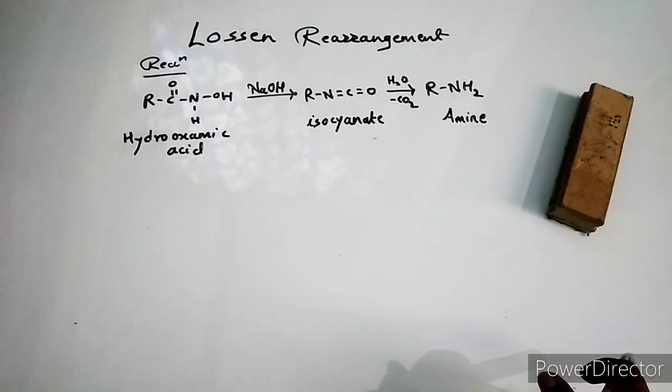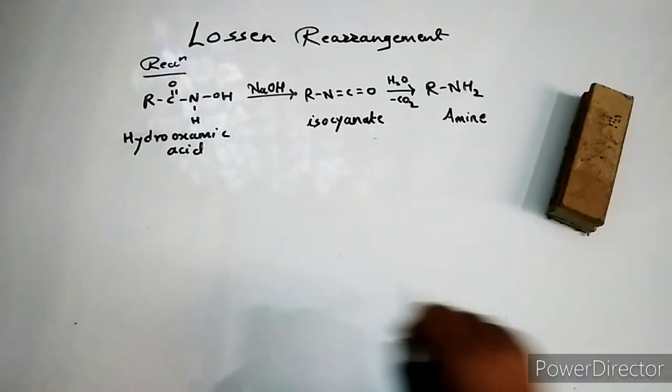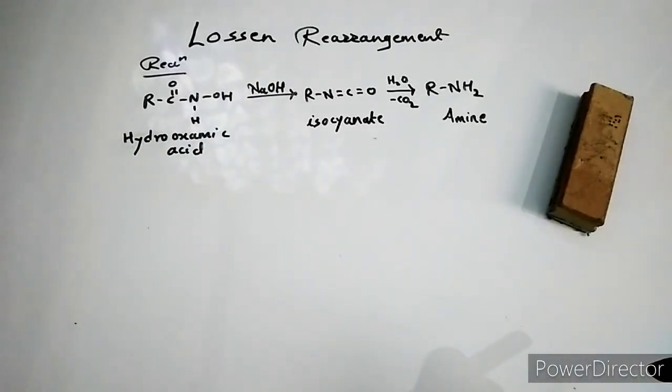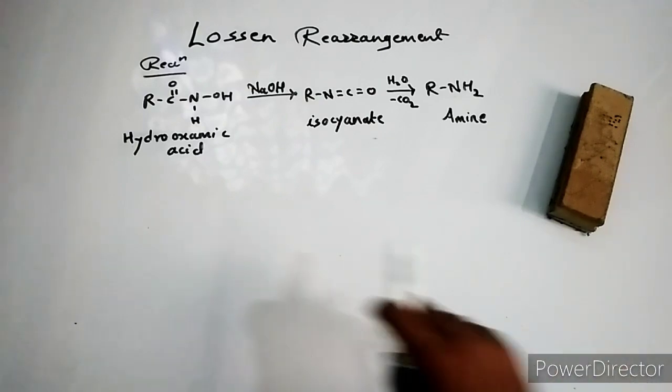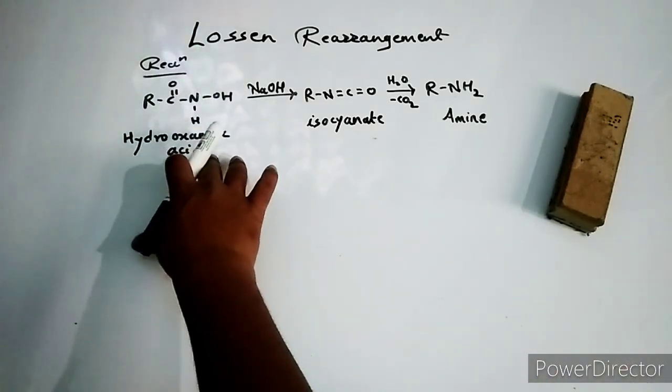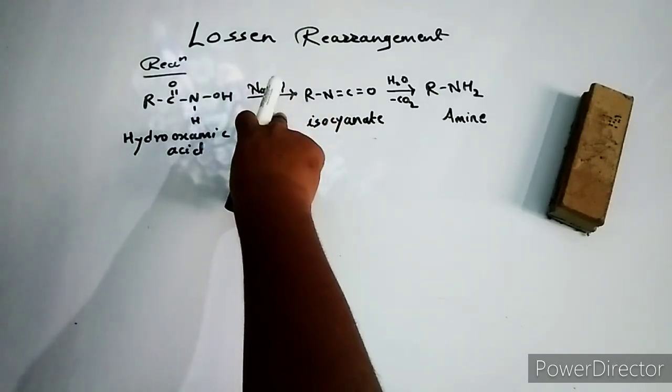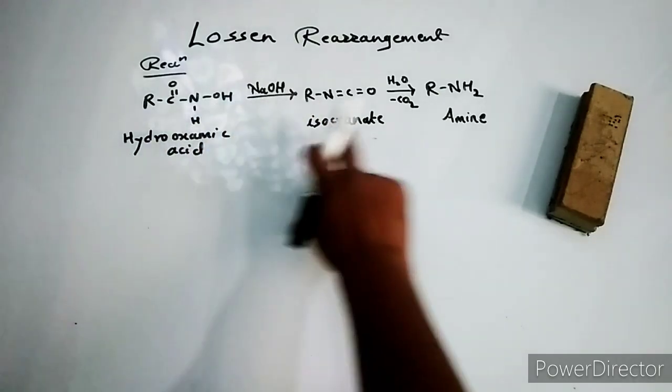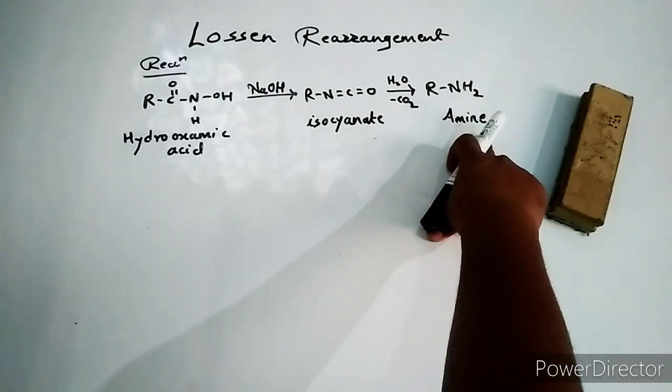Hello friends and welcome back to C4U. In this video we are going to see Lossen rearrangement, its mechanism, and we are going to solve some problems. Basically, the reaction is hydroxamic acid treated with strong base like sodium hydroxide, and this reaction is going to give you primary amine as a product.